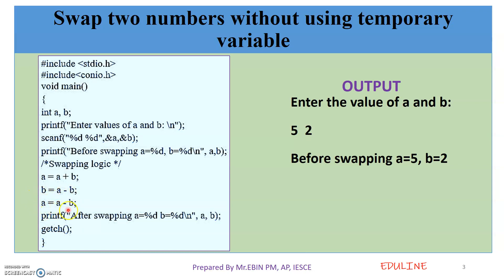Then the third statement executes: A is equal to A minus B. A value is 7 and B is now 5, so A becomes 7 minus 5, which equals 2. So A is equal to A minus B, giving us A equals 2.